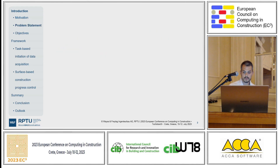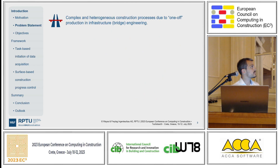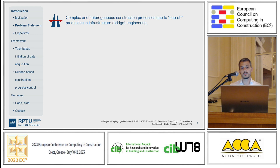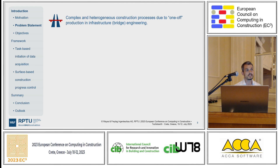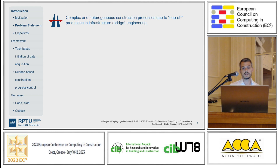That brings me to my problem statement. We have complex and heterogeneous construction processes due to one-off production in civil and bridge engineering. Every bridge is different in Germany — we have seen 43,000 bridges in Germany, so you can imagine they are all different. Of course they are similar, but still the construction process of a construction company, they are just different.